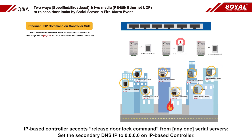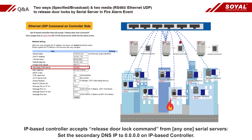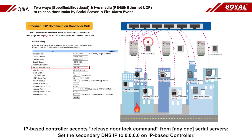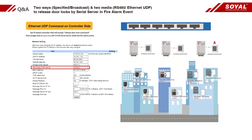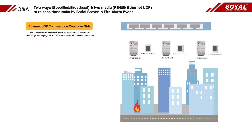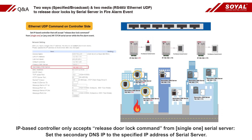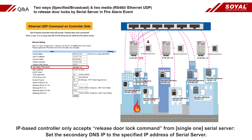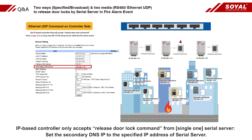The IP-based controller expects a release door lock command from any one serial server. See the secondary DNS IP set to 0 on the IP-based controller, so it uses only one serial server. Now, set the secondary DNS IP to specify the IP address of the serial server.